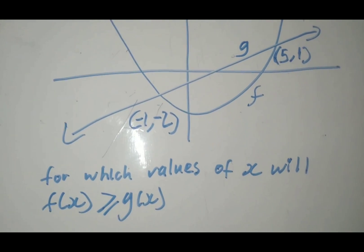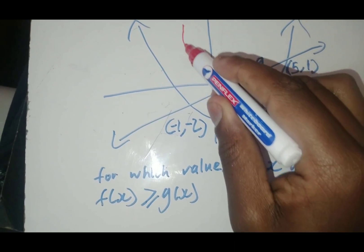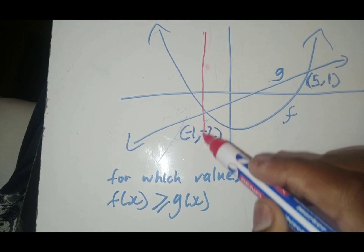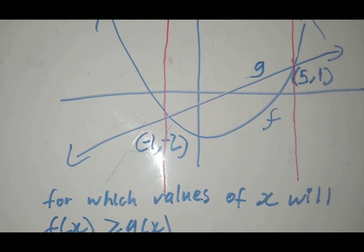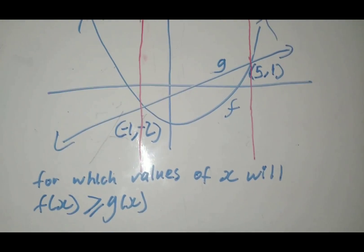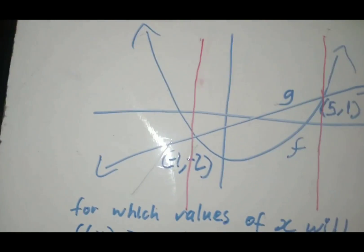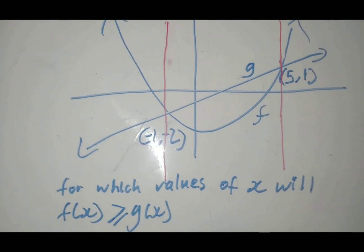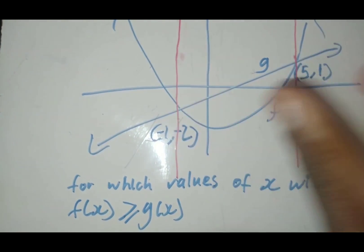So they meet here and there. What you have to do when you find out where they meet is to draw vertical lines. So let's draw vertical lines where they meet. These vertical red lines separate the whole Cartesian plane into three groups: group 1, group 2, and group 3, separated by these vertical lines.